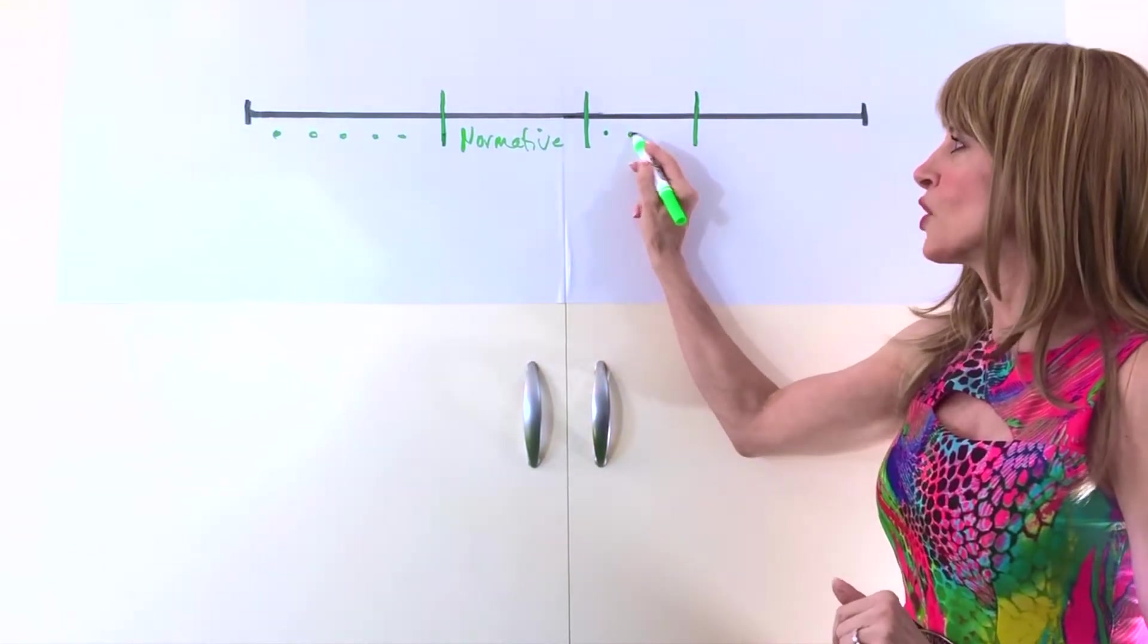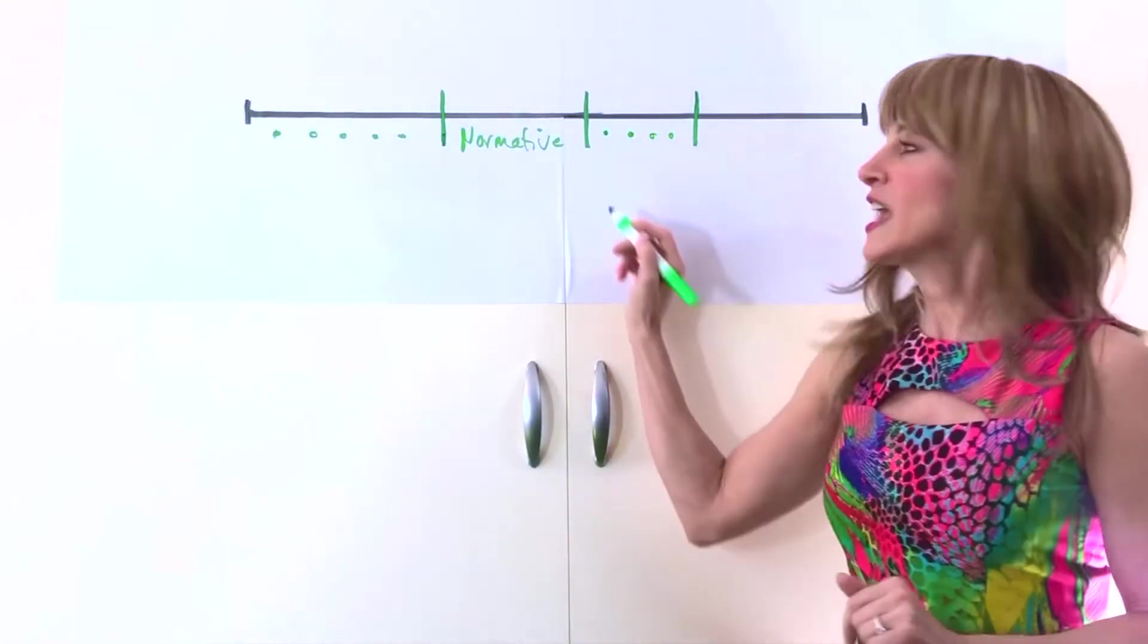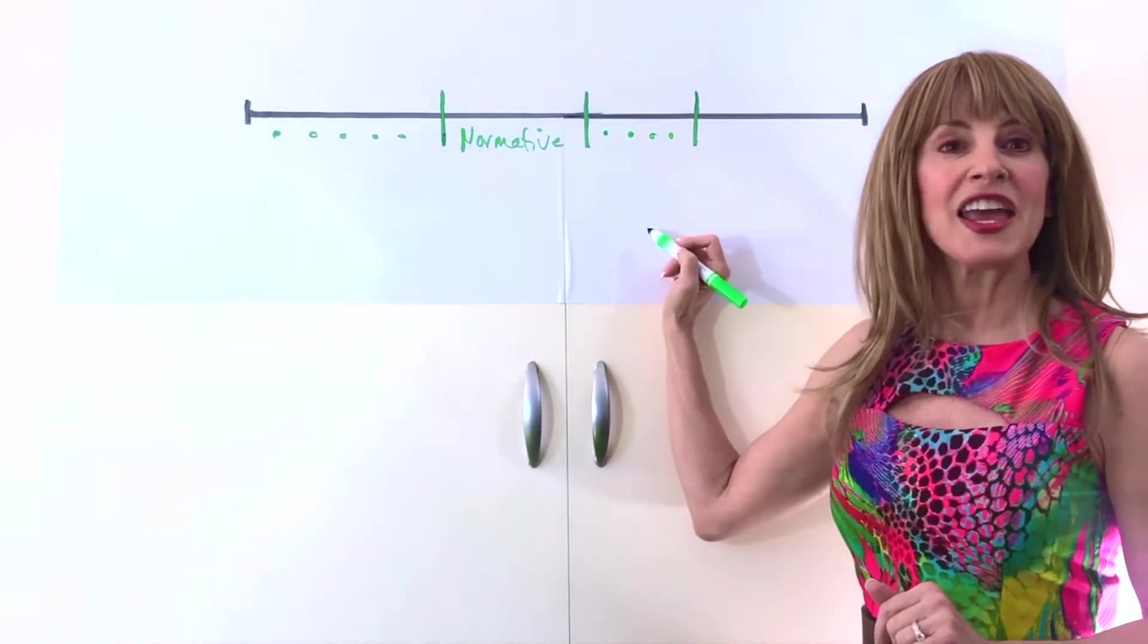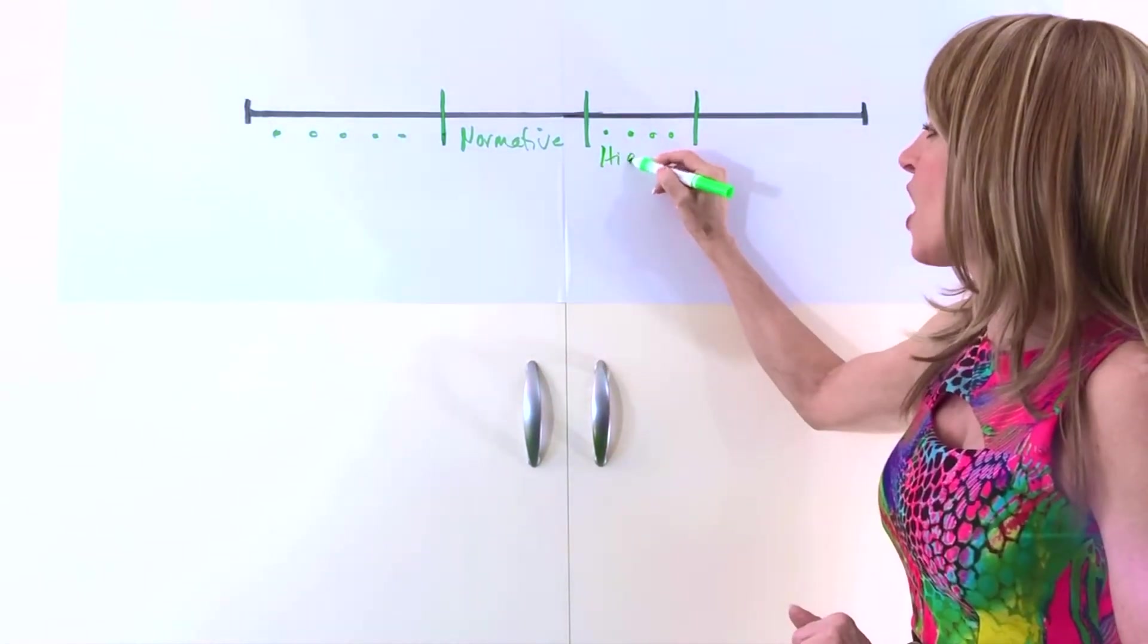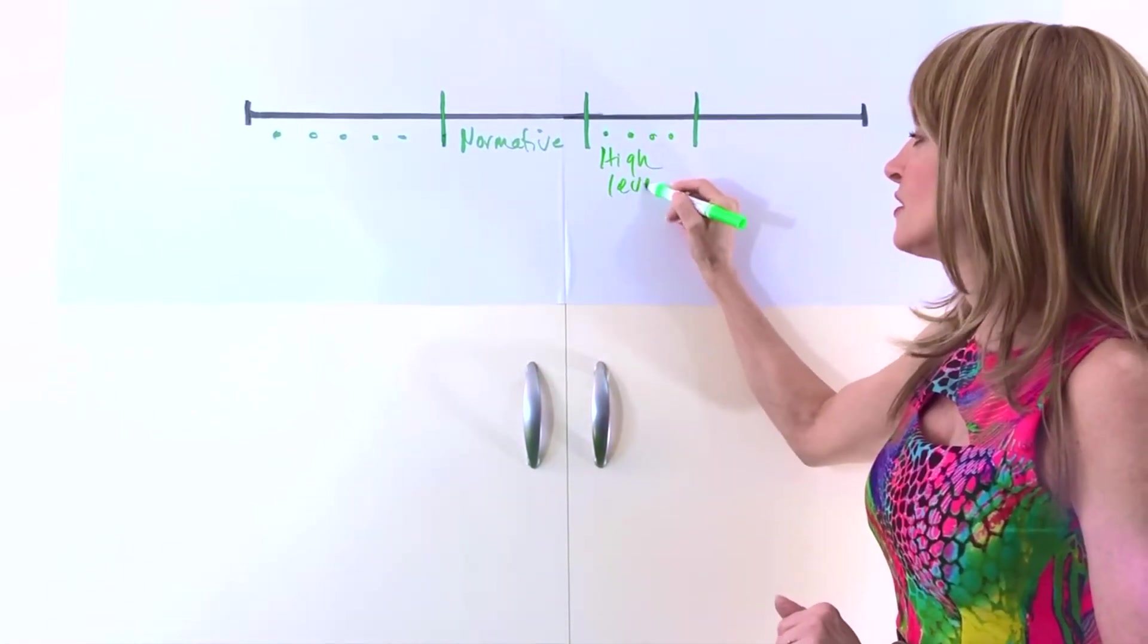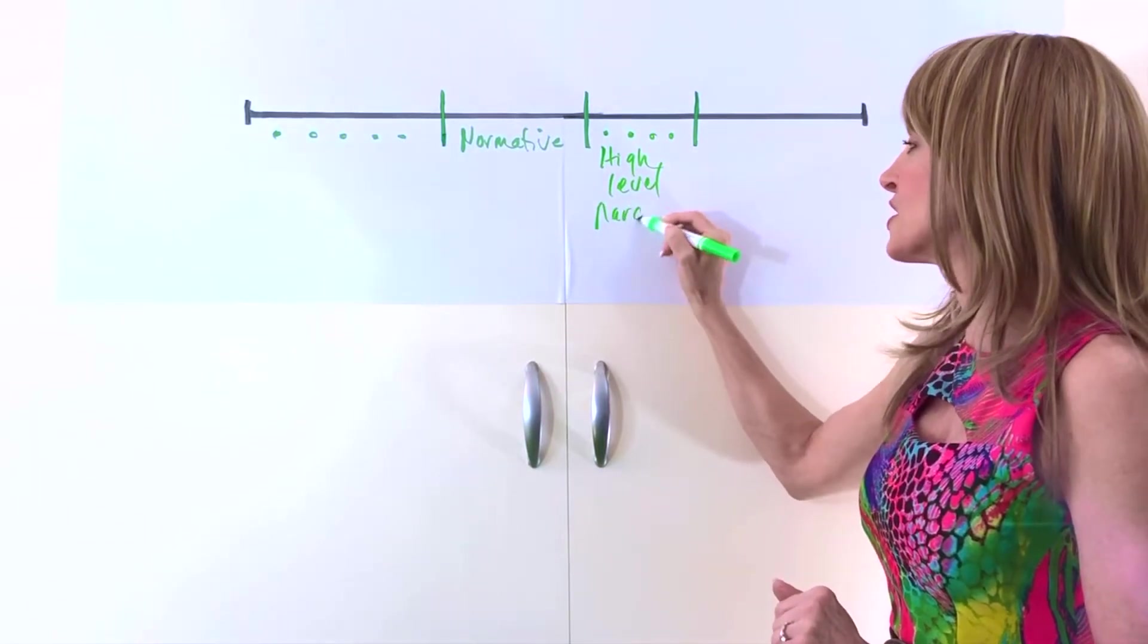Okay, so here we're going to go up the scale a little more. Here, high level narcissists. So these folks have a high level of narcissism.